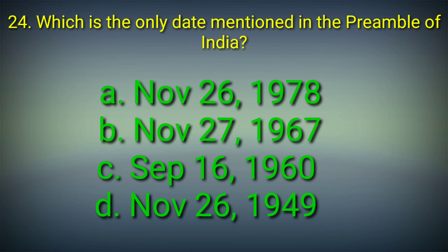24th question: Which is the only date mentioned in the preamble of India? Options: A. November 26, 1978, B. November 27, 1967, C. September 16, 1960, D. November 26, 1949. Answer: Option D. November 26, 1949 is the only date mentioned in the preamble of India.